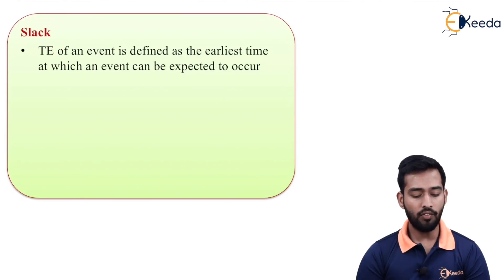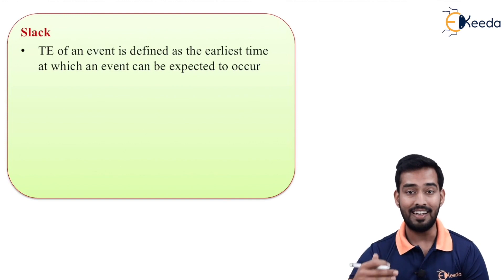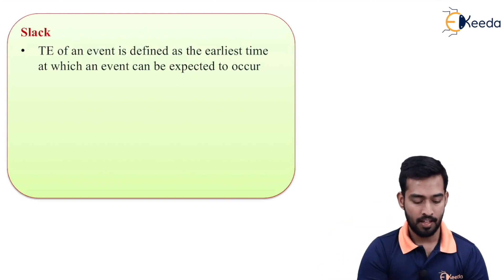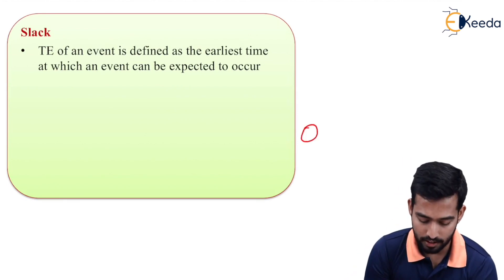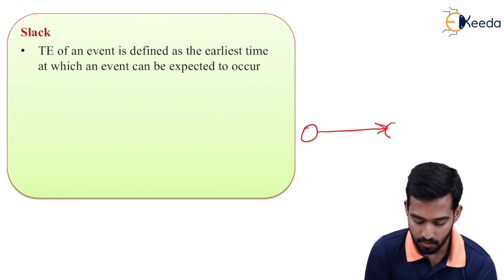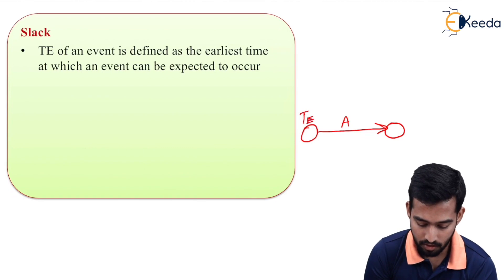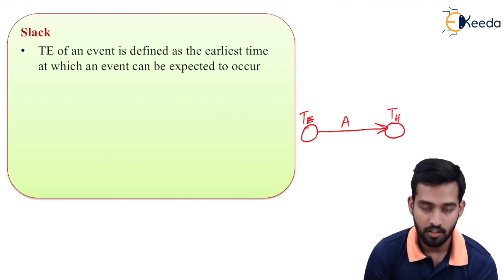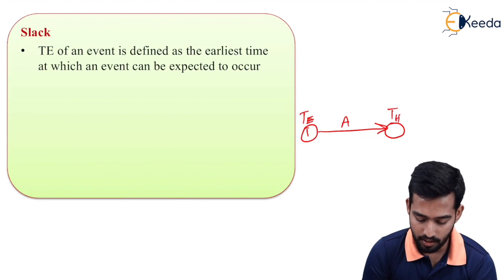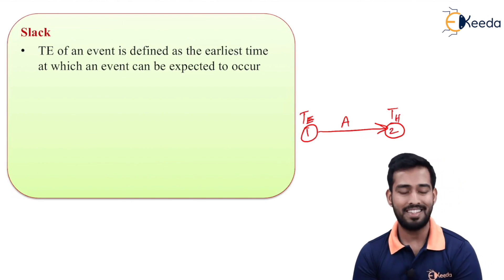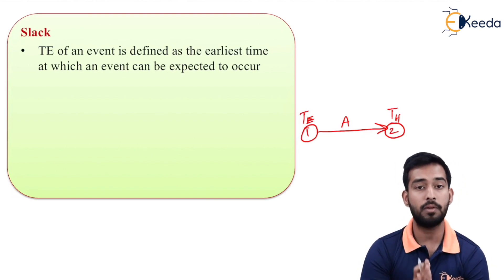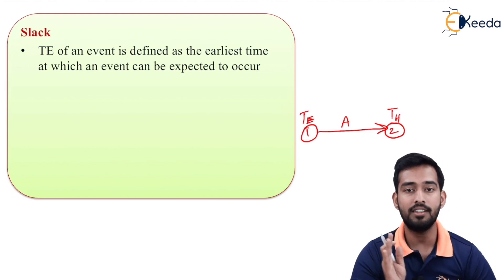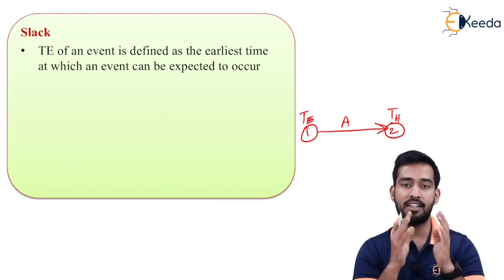The earliest time of an event, Te, is defined as the earliest time at which an event can be expected to occur. If you draw an activity, we have a tail event and a head event — tail event one and head event two. So Te is the earliest time at which the event can be expected to occur, meaning it is the earliest time at which we can start that particular activity.